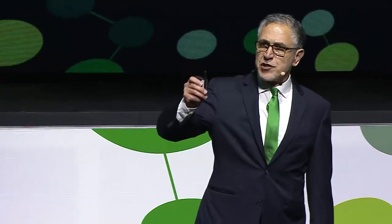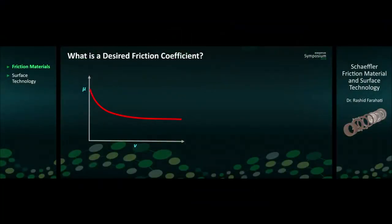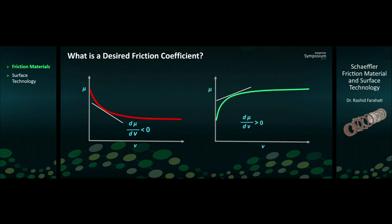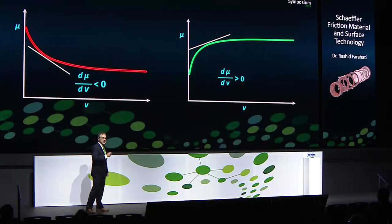Most friction materials, if we measure friction coefficient over speed, are going to act like the red curve. At low speed it's high; as speed increases, it goes lower. In other words, the gradient is negative. This performance does not work in clutch applications — I'm going to show you why in the next slide. What we need is a positive friction coefficient over speed.